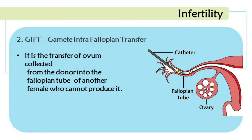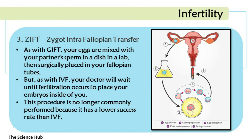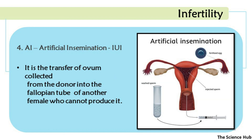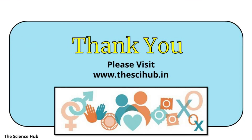GIFT (gamete intra-fallopian transfer) involves the transfer of an ovum collected from a donor into the fallopian tube of another female who cannot produce one. ZIFT (zygote intra-fallopian transfer): eggs are mixed with the partner's sperm in a lab dish, and the fertilized embryo is surgically placed in the fallopian tubes. This procedure is no longer commonly performed due to its lower success rate. IUI (intrauterine insemination or artificial insemination) involves transfer of sperm into the uterus of the female. Thank you for watching; for further updates please visit www.thescihub.in.